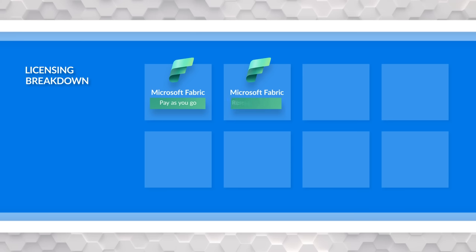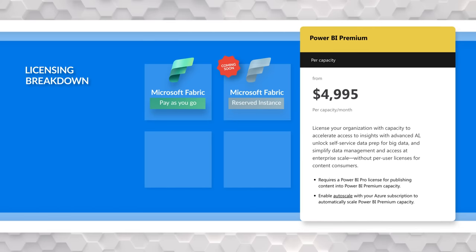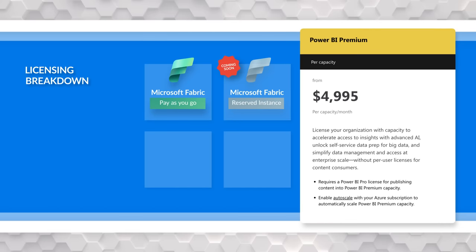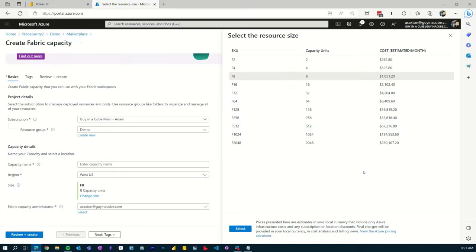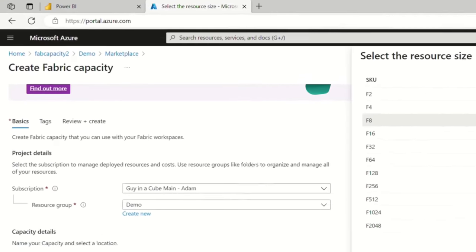There's also a reserved instance option coming later in the year. From a pricing perspective, that reserved instance will be the equivalent of what you can pay for a Power BI Premium capacity today. That's the main piece of the Fabric capacities, but you have different capacity options today.